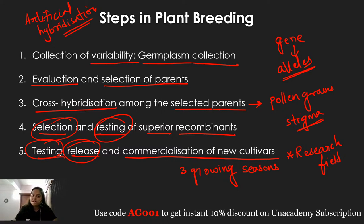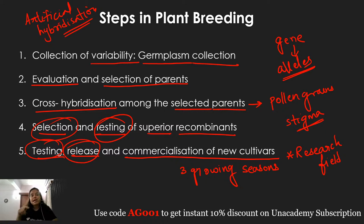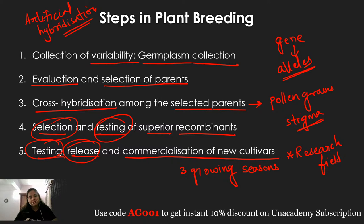The data collected from the hybrid is compared with the best available local cultivar. If the hybrid is superior, it is made available for commercialization. These are the steps in plant breeding: germplasm collection, parent selection, hybridization, selection of the superior recombinant, testing in research field then farmer's field across three growing seasons in different agro-climatic zones, and finally commercialization.